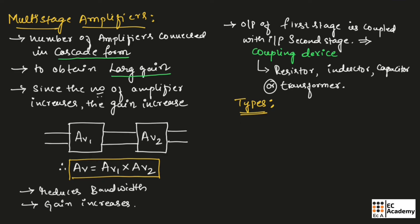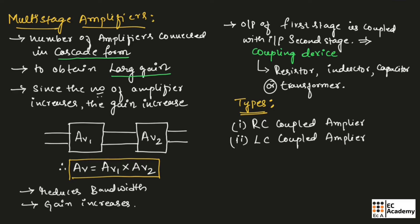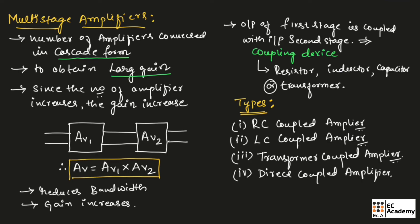Now let us see the different types of multi-stage amplifiers. The first type is the RC coupled amplifier, in which a resistor and capacitor are used as coupling devices. The second type is the LC coupled amplifier, in which an inductor and capacitor are used as coupling devices. The third type is the transformer coupled amplifier, where a transformer is used as the coupling device. The next type is the direct coupled amplifier, in which no devices are used as the coupling device.